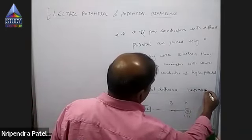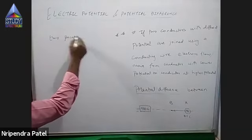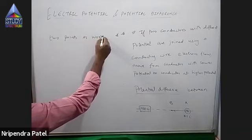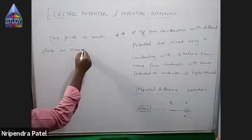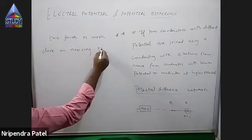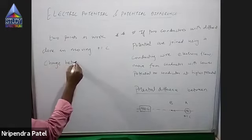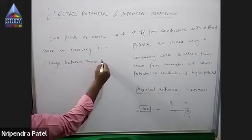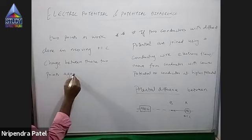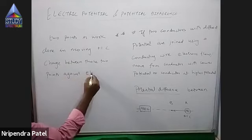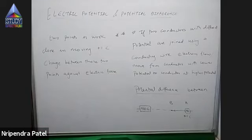The potential difference between two points is defined as the work done in moving a plus one coulomb charge between those two points against the electric force. This is a very important statement.